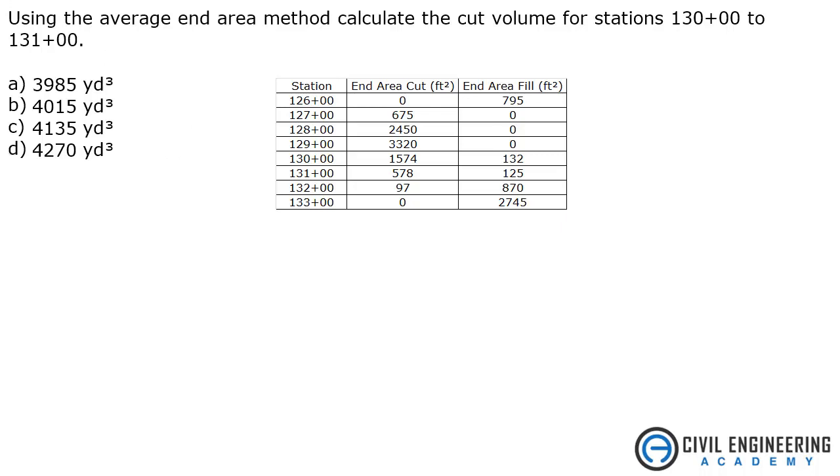Today we are solving a problem from construction. The problem states: using the average end area method, calculate the cut volume for stations 130+00 to 131+00. So all we are worried about is between 130 to 131, and all we are worried about is the cut area, because we are asking for cut volume.